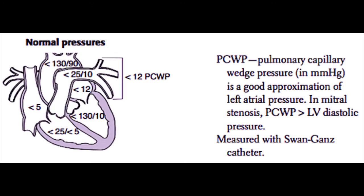It is important to remember what the wedge pressure is in a patient, because the wedge pressure, which is analogous to the left atrial pressure, is approximately equal to the left ventricular end-diastolic pressure. Left ventricular end-diastolic pressure is preload, so we can equate wedge pressure with preload in most patients. This tells us how bad a patient's heart failure is — if a person has very bad left ventricular heart failure, their wedge pressure will be markedly elevated in most cases.